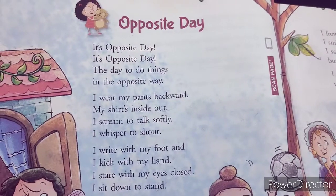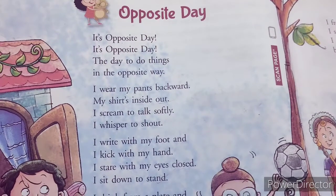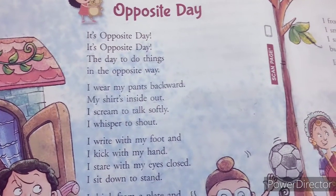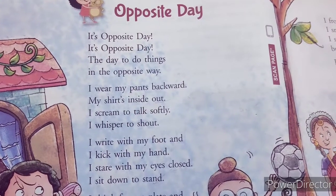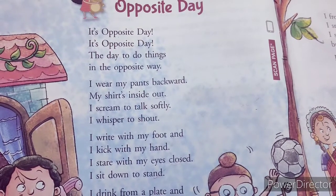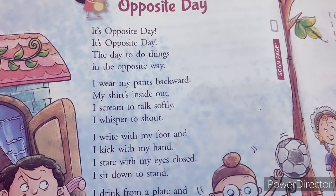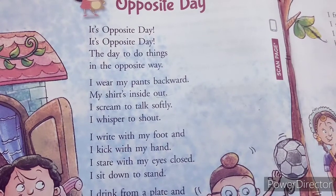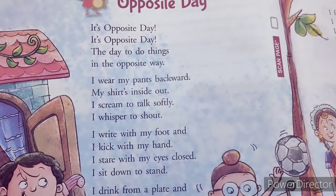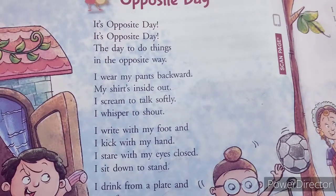It's opposite day, it's opposite day, the day to do things in the opposite way. The poet says that today is opposite day and he has to do every task in reverse. I wear my pants backward, my shirt inside out. I scream to talk softly, I whisper to shout. Scream means cheekhna — and he's saying that to talk softly, he will scream.